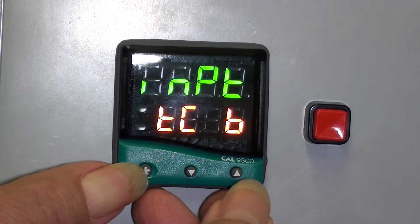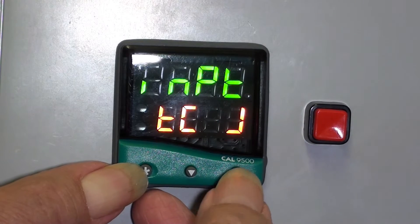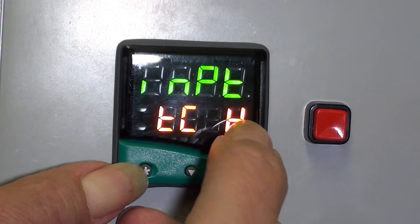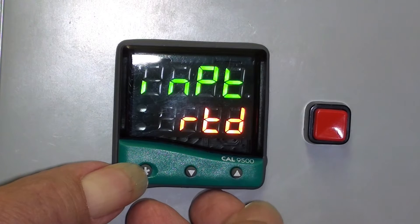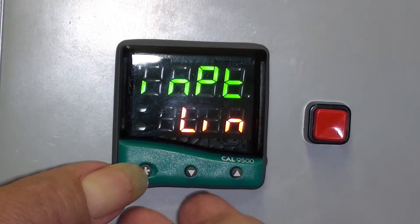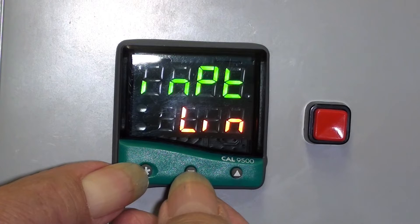This will take you into the selection menu. Various types of thermocouple: Type J, Type K, L, N, RTD, Linear. I'm going to select RTD.